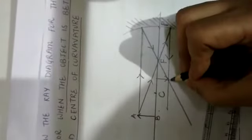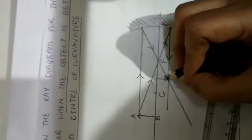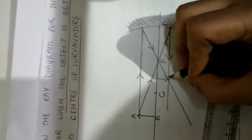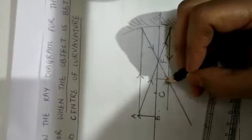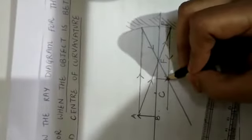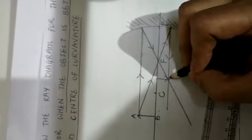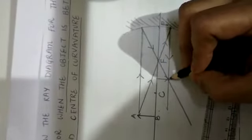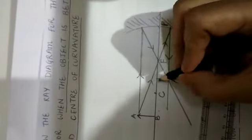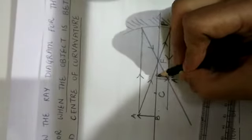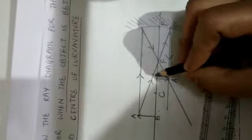This is our image, and as you can see it is an inverted image, because it is formed below the principal axis. The image formed below the principal axis is real and inverted. This is our image A' B' — a real and inverted image.